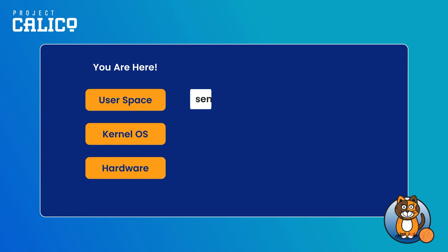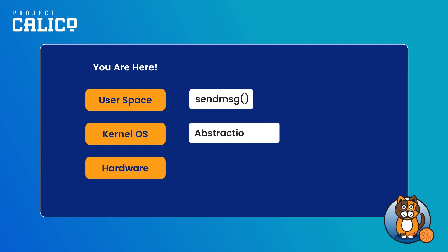In most cases, when you write a program or use a program, it is executed in user space, using abstraction layers built into the kernel. This API goes to the kernel and says this program wants to send a TCP packet or UDP packet, for example, for networking.